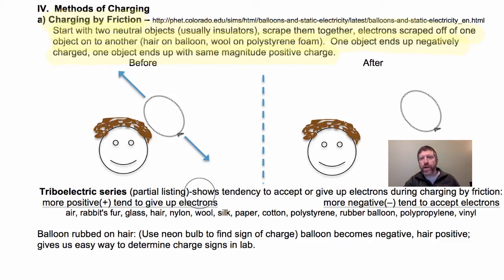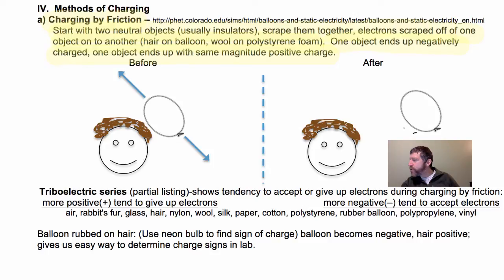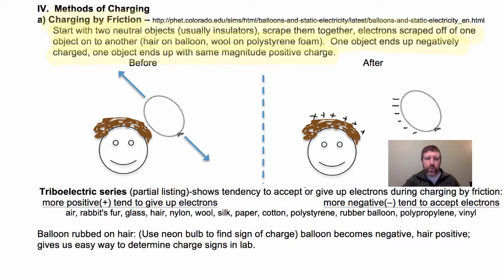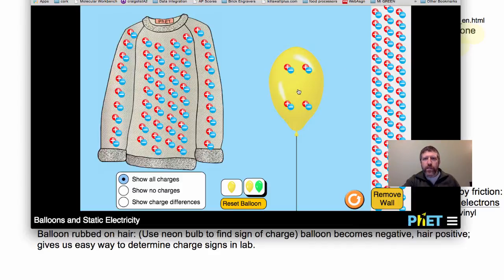So when you rub the balloon on your hair, what happens is the balloon scrapes off negative charge — and I know that because I tested it with that neon bulb. But what does that mean is left on the hair? It's got to be the exact same amount of positive charge. So this is called charging by friction.